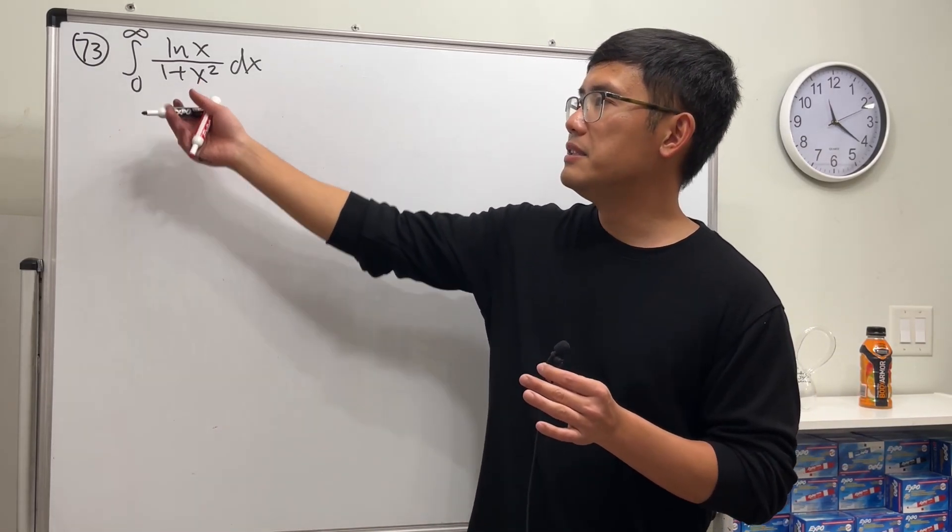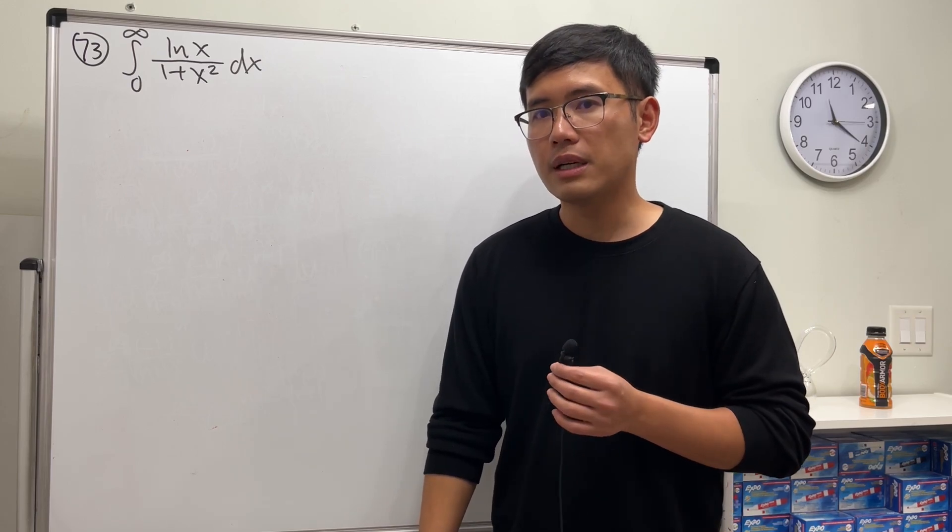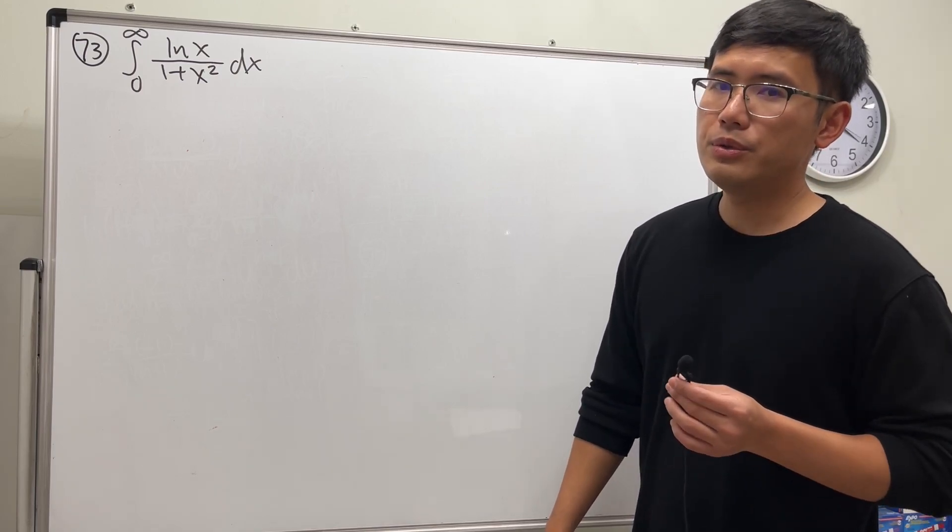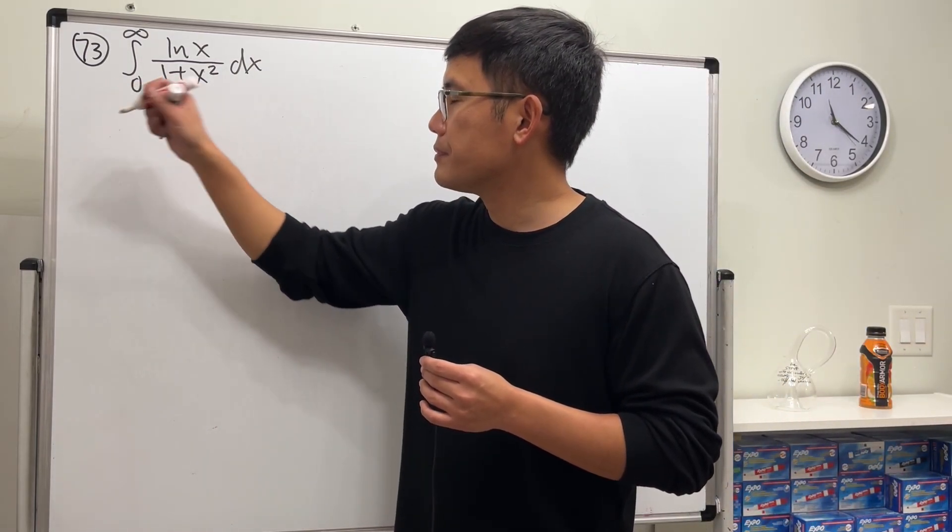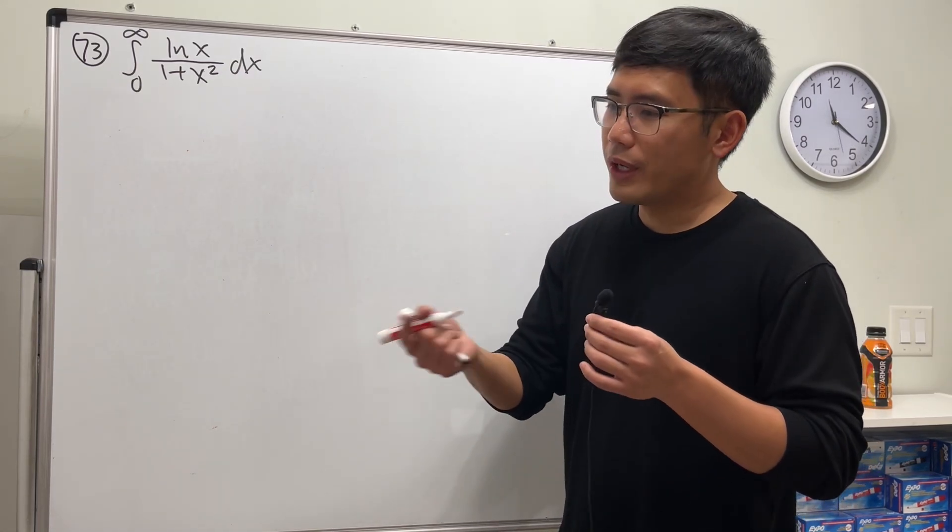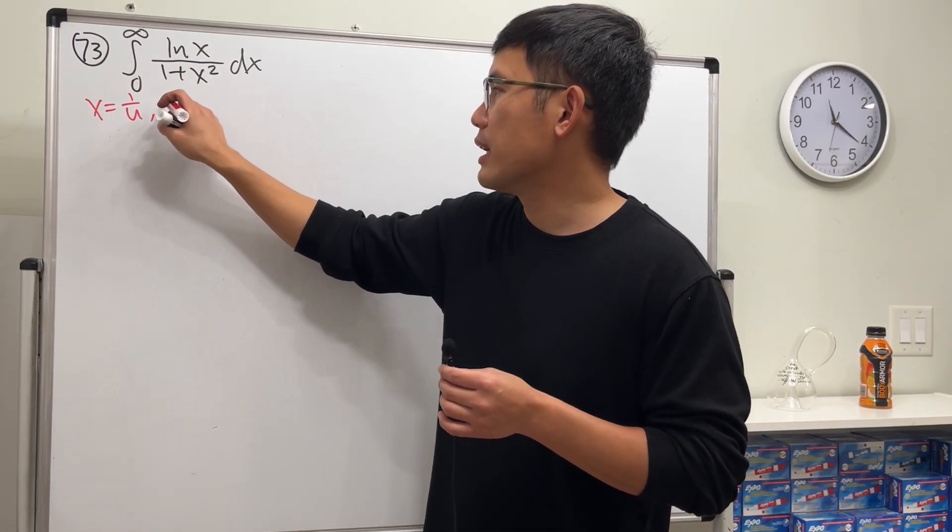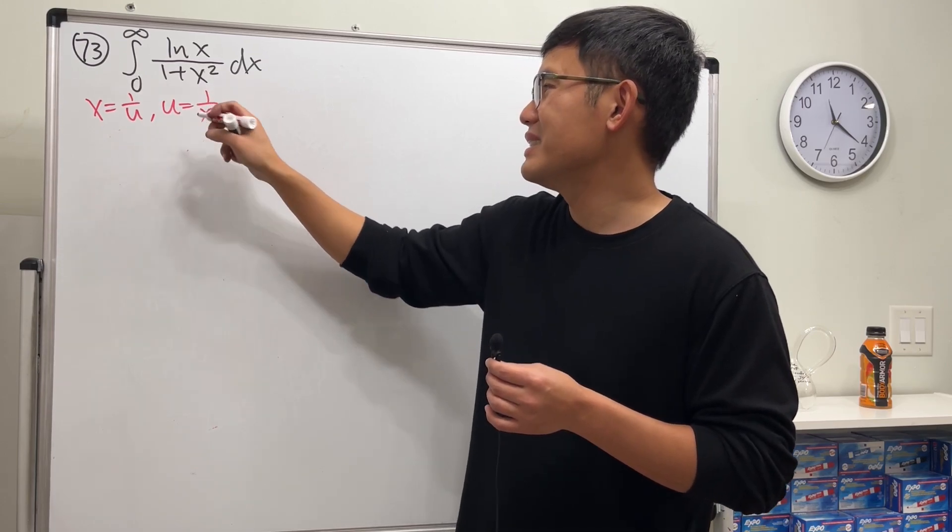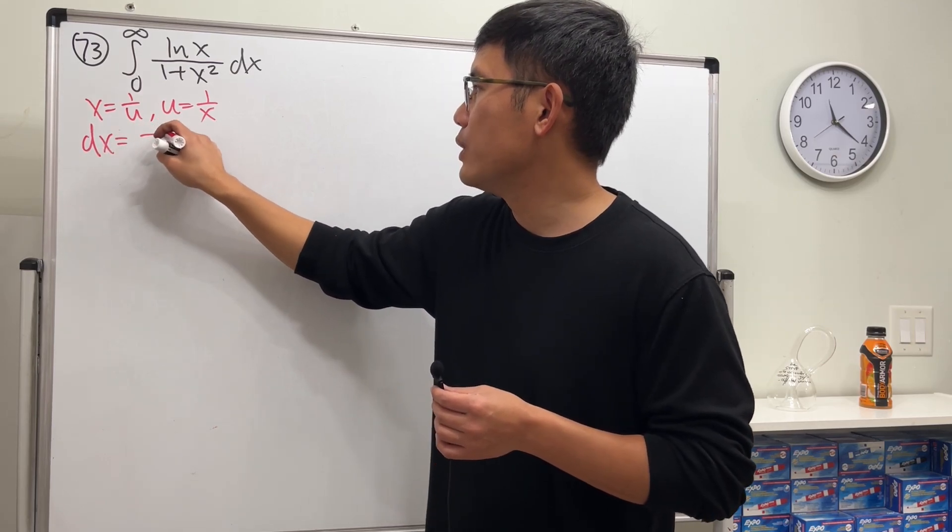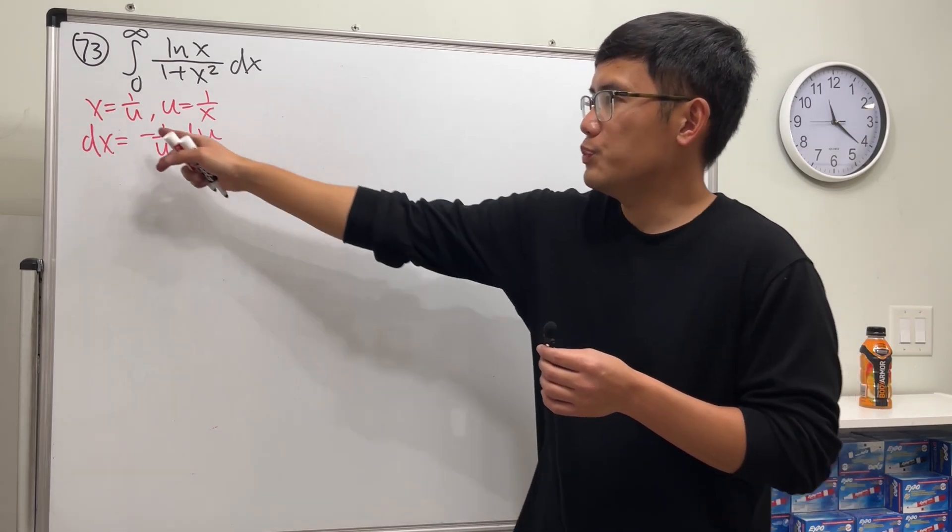Here we are going to take advantage of that. This is the definite integral, so maybe we can do some symmetry, that kind of business. Let me show you. I will do a substitution. Have a look. I will do the following: I'm going to say let x equal to 1 over u. In another word, u is equal to 1 over x, same thing. And then of course dx will be negative 1 over u square du.